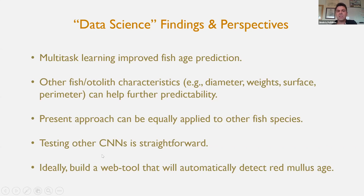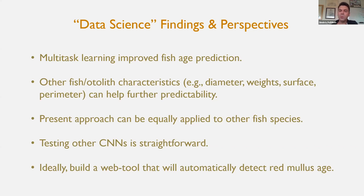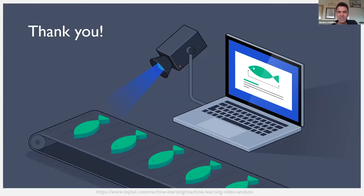Future work includes testing other CNN architectures beyond Inception V3 — we tested a couple and accuracy was more or less the same. Ideally, the fisheries community would like a web tool that automatically detects age rings from otolith images, allowing biologists to upload otoliths and receive the predicted fish age. This is our ideal next step. With this, I close my presentation. Thank you.